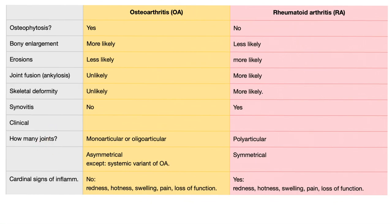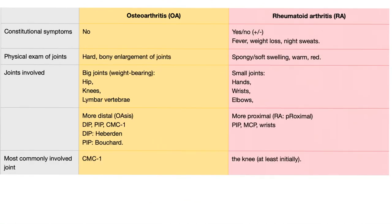Clinically, osteo is mono or oligoarticular, while rheumatoid is polyarticular — lots and lots of joints. Osteo is asymmetrical; rheumatoid is symmetrical. Cardinal signs of inflammation are absent in osteo but present in rheumatoid. Constitutional symptoms are absent in osteo but present in rheumatoid. On physical exam, osteo joints feel hard with bony enlargement, but in rheumatoid they are spongy, soft, warm, and red. Osteo involves weight-bearing joints — hips, knees, lumbar vertebrae — while rheumatoid involves small joints — hands, wrists, and elbows. Osteoarthritis is more distal; rheumatoid is more proximal. Think: OA — oasis is distal.